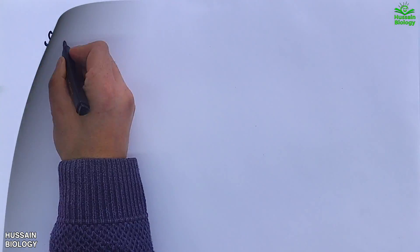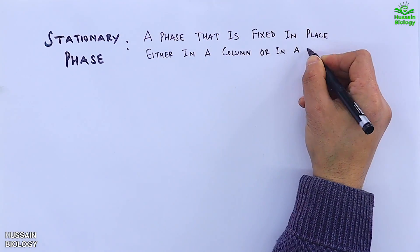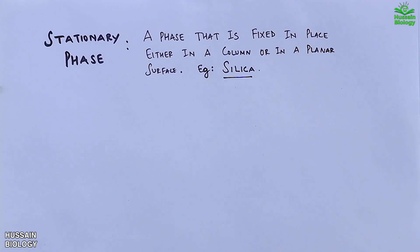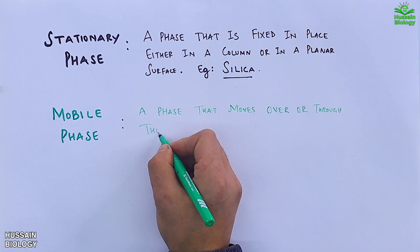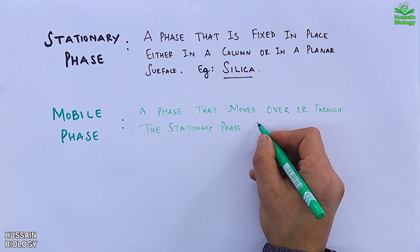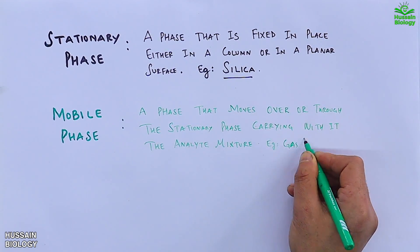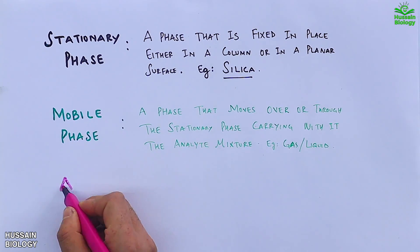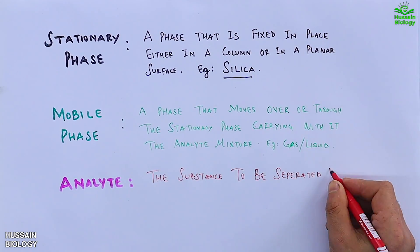The stationary phase is fixed in place either in a column or on a planar surface, for example silica. The mobile phase is a phase that moves over or through the stationary phase, carrying with it the analyte mixture — it can be gas or liquid. And finally, the analyte is the substance to be separated during chromatography.